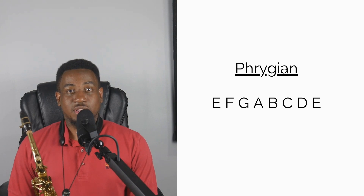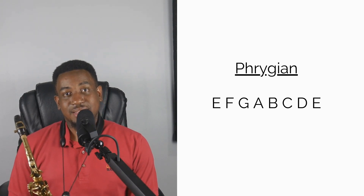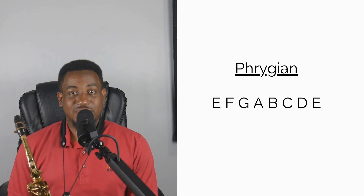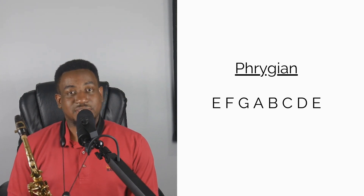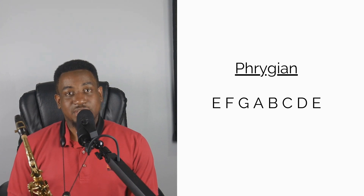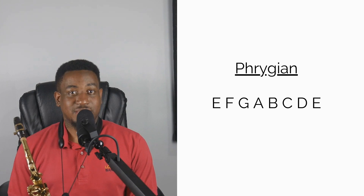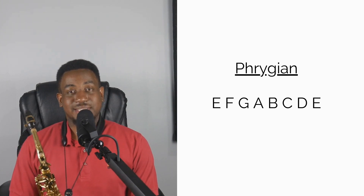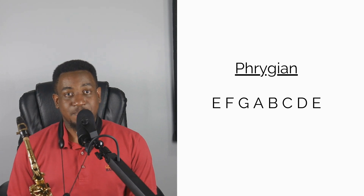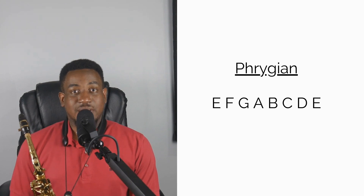The third mode is called the Phrygian mode. E is the third scale degree of the C major scale, so you do E to E playing all the notes in the C major scale: E F G A B C D E. This is called the E Phrygian scale.